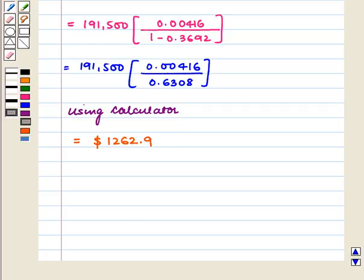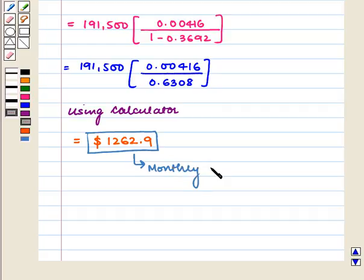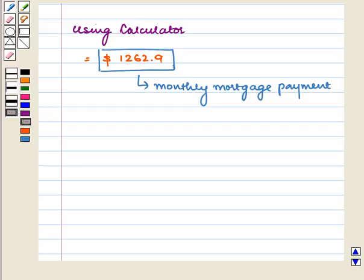Thus, using the formula, the monthly mortgage payment for Sam's loan is $1,262.90. In this session, we have discussed mortgage loans and learned to calculate monthly mortgage payments for a fixed rate mortgage loan. This completes our session. Hope you enjoyed it. Bye.